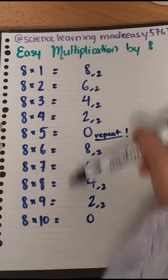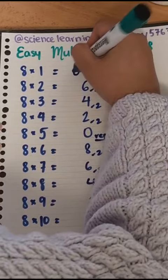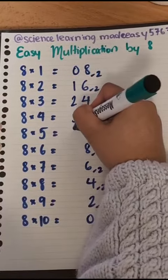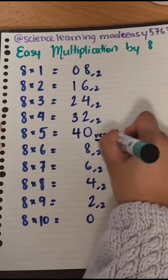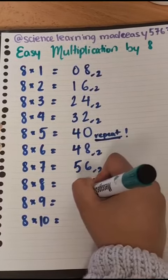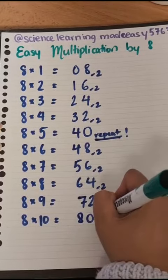Then you're going to start here with 0, 1, 2, 3, 4. Repeat. 4, 5, 6, 7, 8.